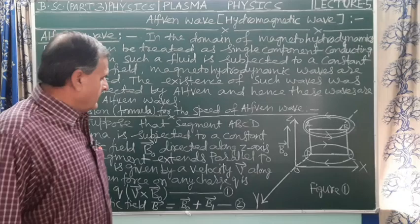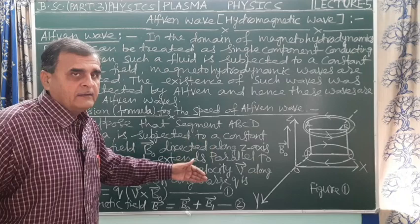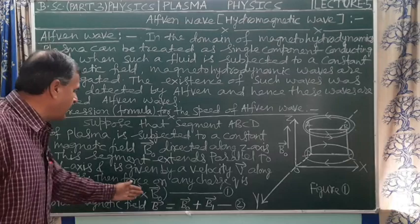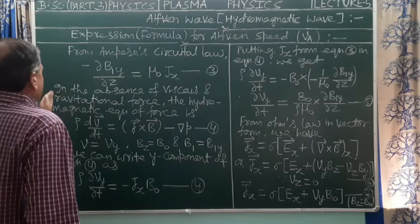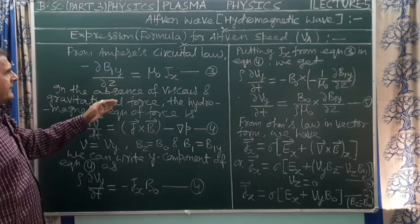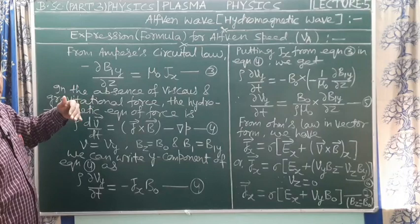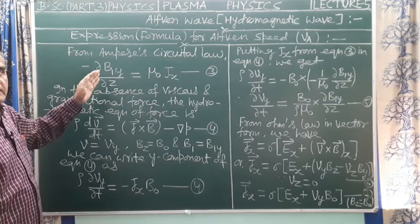So the total magnetic field B vector equals B0 vector (the external constant magnetic field applied along the z-axis) plus B1 vector (the magnetic field produced due to induced current). This is equation number 2. From Ampere's circuital law, we have: −∂B1y/∂z = μ0 × jx, where jx is the x-component of current density and B1y is the y-component of the induced magnetic field.